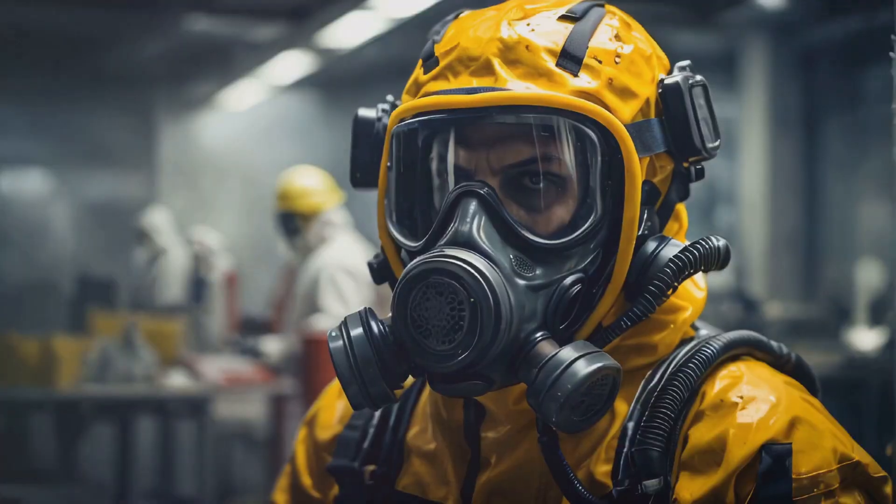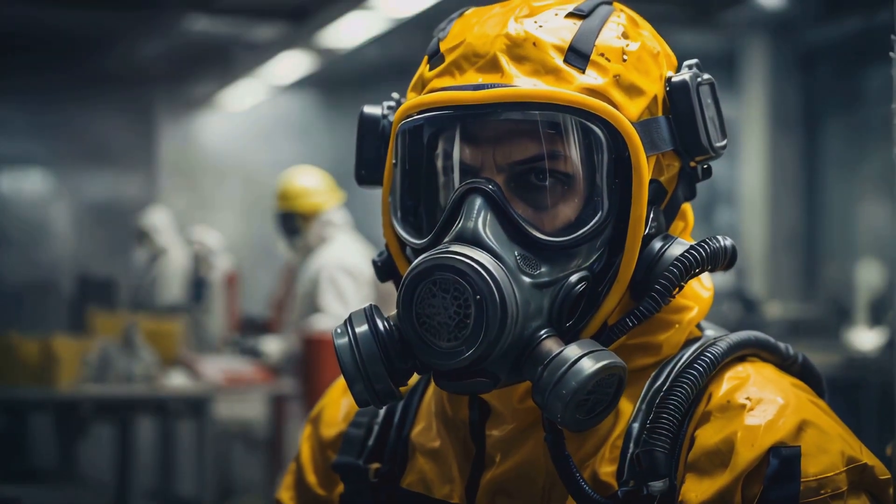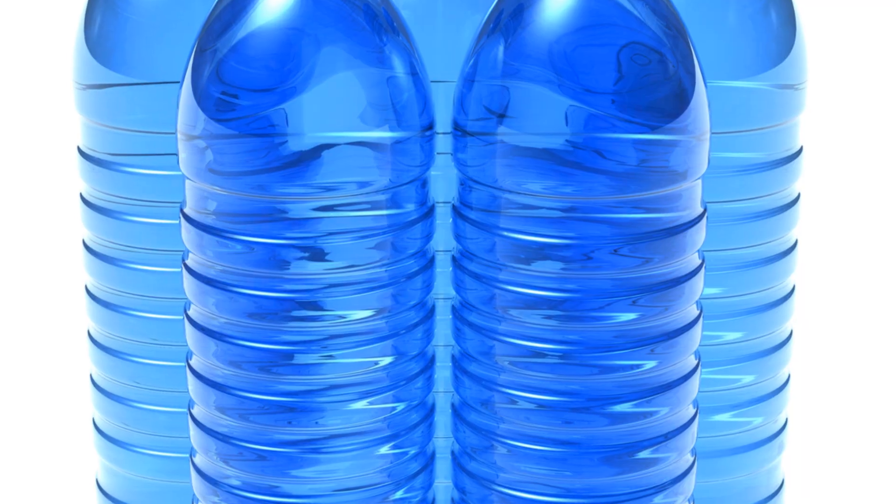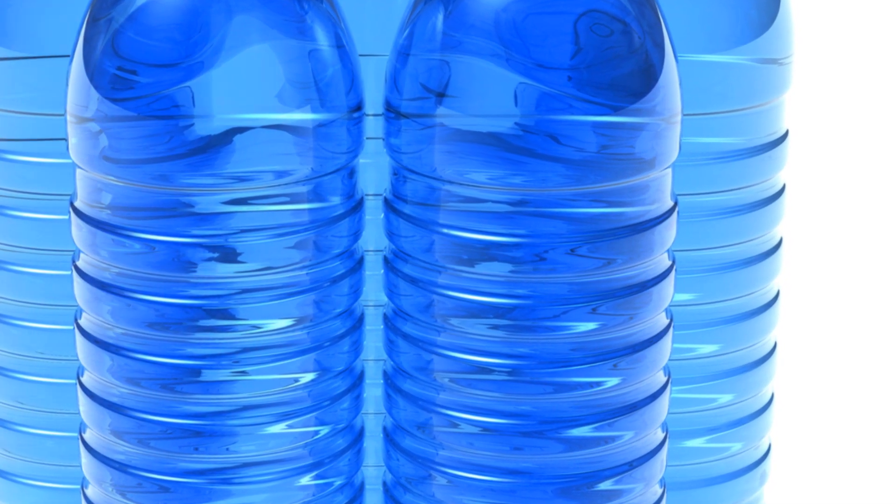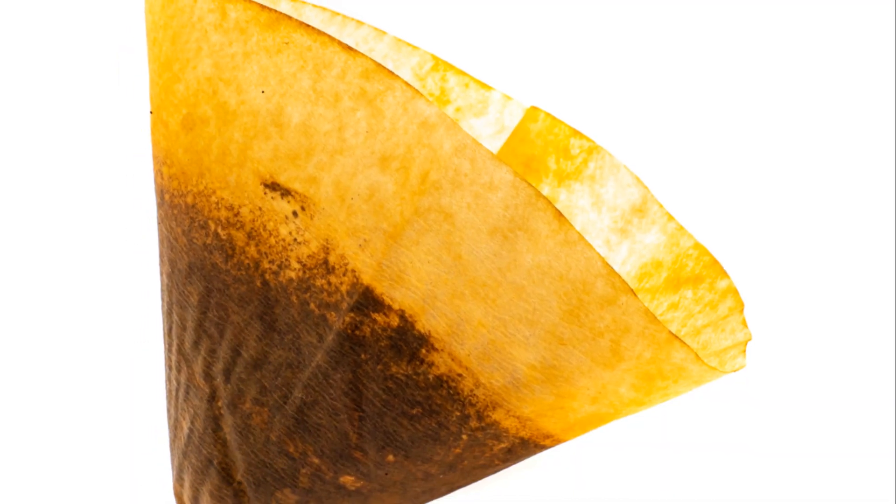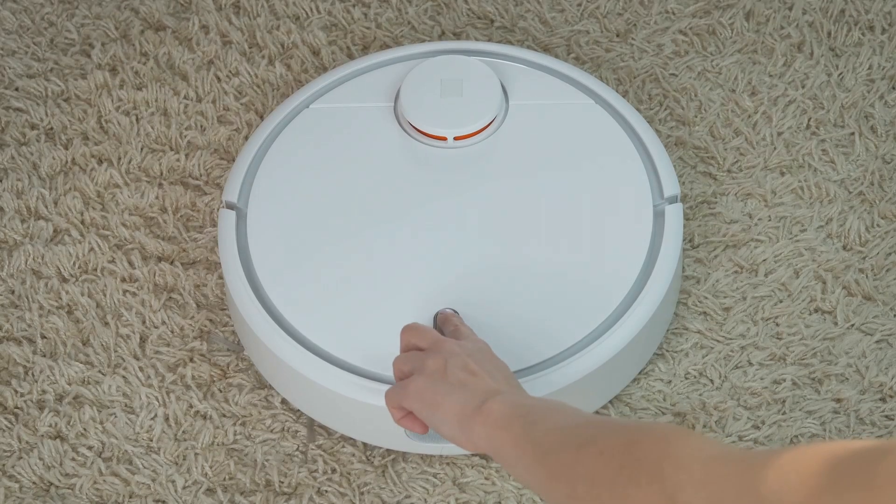The filter paper will trap the solid gold particles, while the now clear liquid, which contains dissolved base metals and other impurities, will pass through. This liquid can be safely disposed of following proper chemical disposal guidelines. Rinse the filter paper with distilled water a few times to remove any remaining traces of acid or impurities. You should be left with a filter paper containing a brownish residue. That's our gold. Carefully remove the filter paper and place it on a watch glass or a heat-resistant surface.